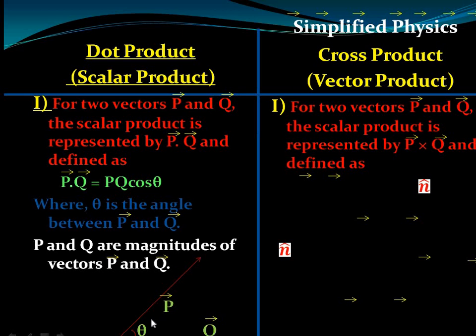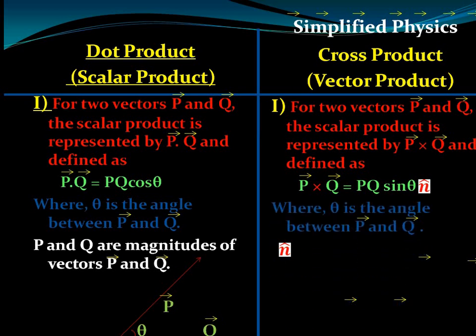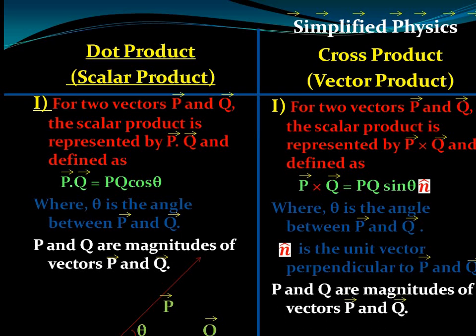The cross product of two vectors is represented by p×q and is defined as p×q = pq sinθ n̂, where n̂ is the unit vector perpendicular to both p and q, theta is the angle between vector p and vector q, and p and q are the magnitudes. So the basic definitions are: p·q = pq cosθ and p×q = pq sinθ n̂.